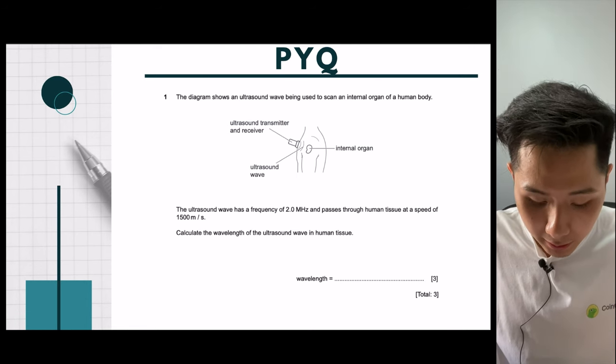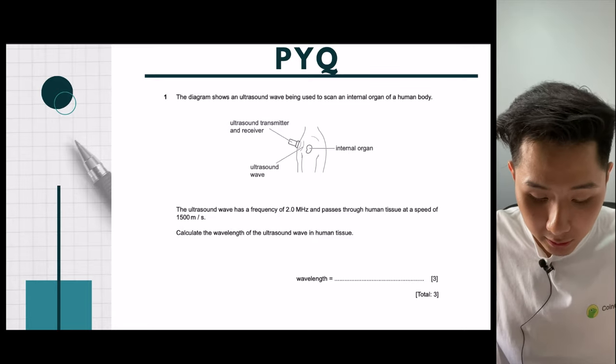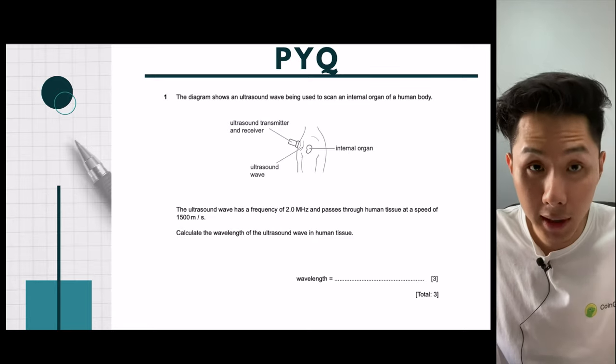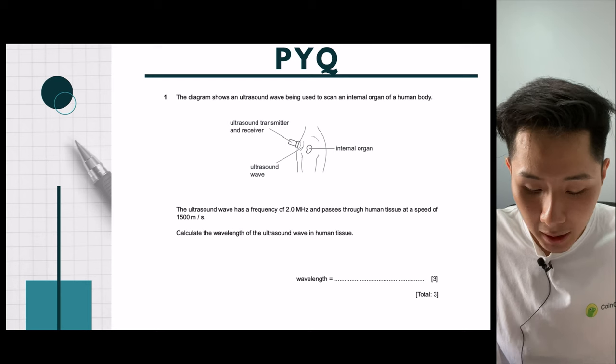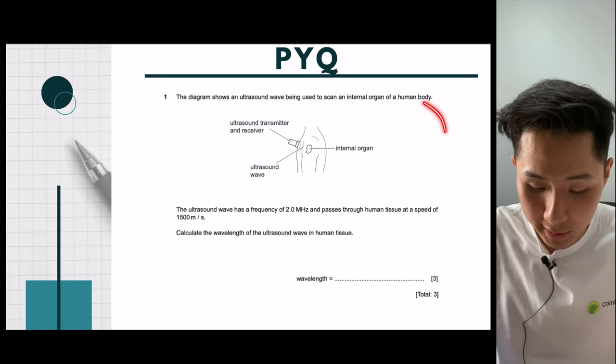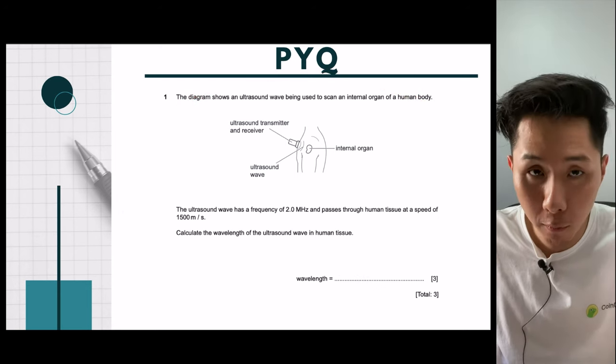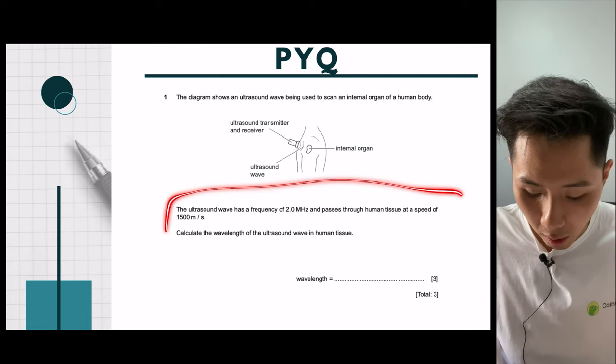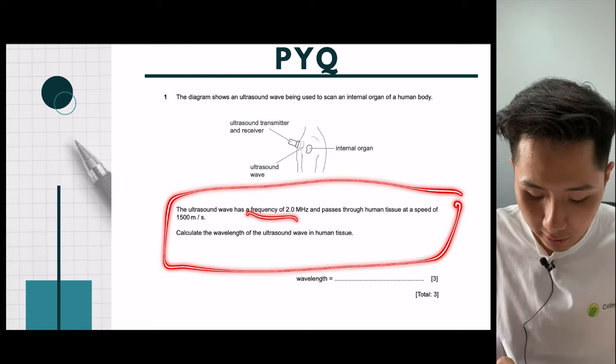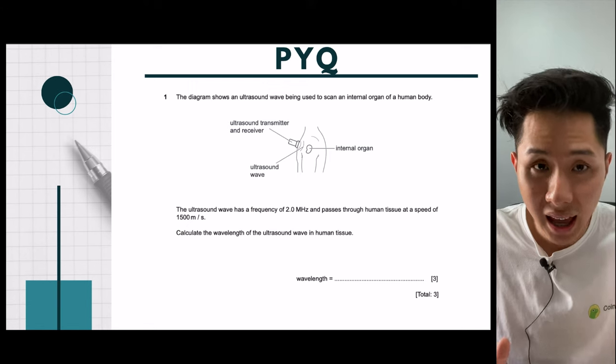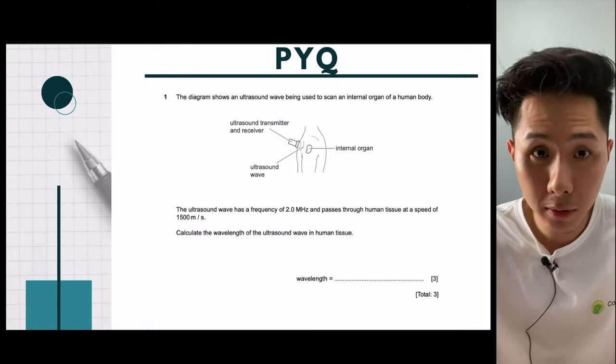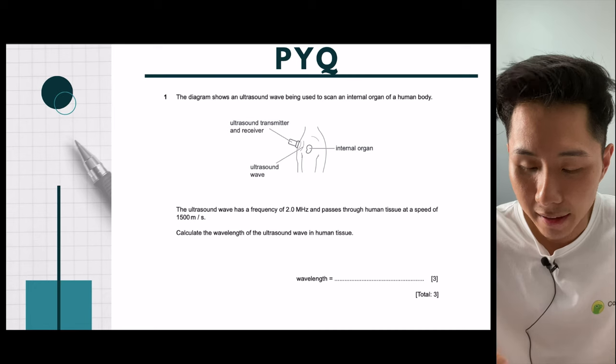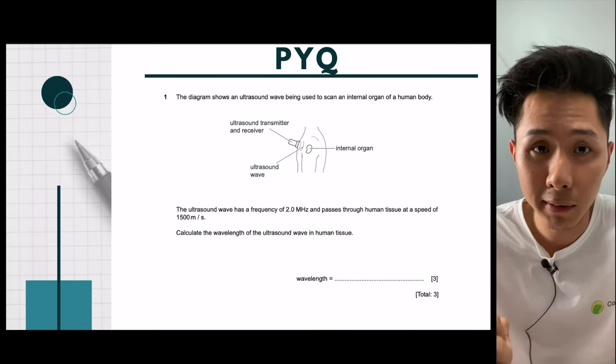Next, the diagram shows an ultrasound. I'm going to skip this question here because it's related to what we will learn in chapter 14. But I just want you to see how the question is like so that when it comes to chapter 14, you'll understand how to solve this question based on what we have learned so far. That's the end of this chapter. I hope you learned a lot about sound. Thank you so much for watching. I'll see you in the next video.